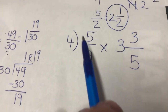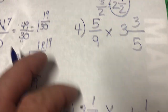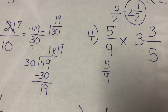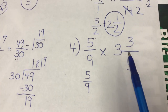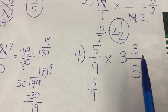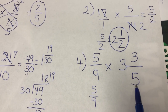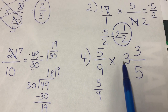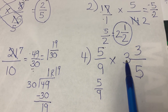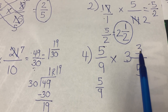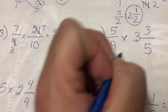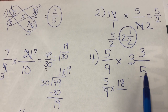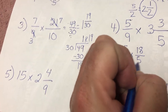Here's our first example with a mixed number — five over nine times three and three-fifths. Step one is to make everything a fraction. Five over nine is already a fraction, so I leave that. For the mixed number, I take the denominator five and multiply by the whole number three: five times three is fifteen. Then I add the numerator three: fifteen plus three is eighteen. My denominator stays five, so three and three-fifths becomes eighteen over five.